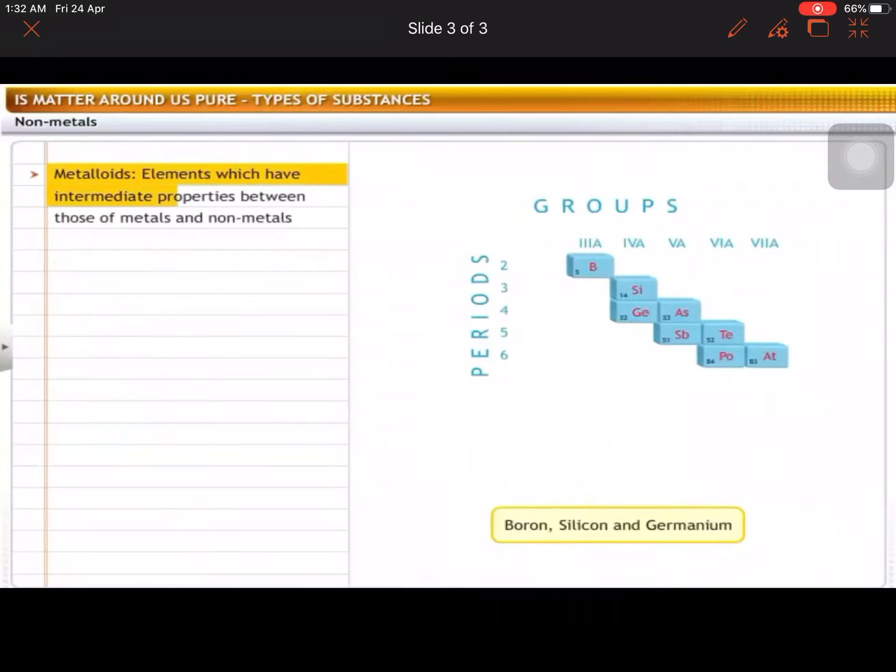Now, the elements which have intermediate properties between those of metals and non-metals - an interesting factor. There are some elements that have both metal properties and non-metal properties. What do you say? It's a group which is shown at a certain point. We'll discuss this when we discuss the periodic table. I'm going to make a rough diagram of the periodic table, right?